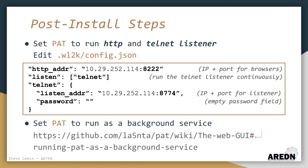There are two things that I want PAT WinLink to do for me behind the scenes. First, I want the WinLink web GUI to run on an available port on my computer. Many mesh services computers already have a web server running for other purposes. In my case, this computer is already using both of the typical HTTP ports — ports 80 and 8080 — so I need to have PAT run its web GUI on a different port. I've chosen port 8222 for web connections to my PAT WinLink interface, and I've entered the IP address of this computer along with port 8222 for the web GUI.